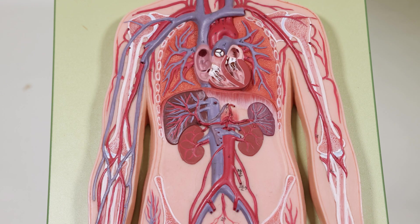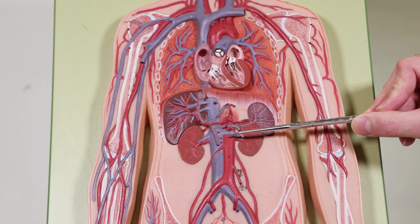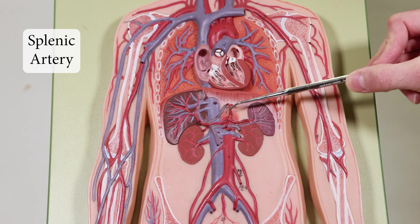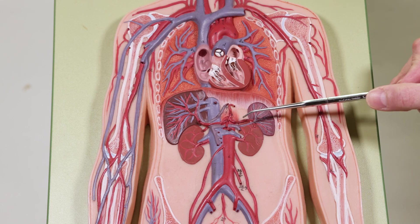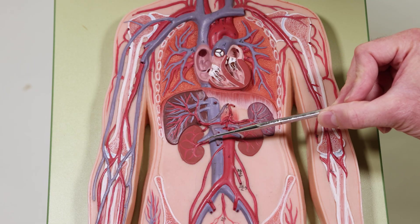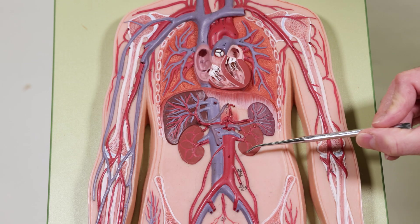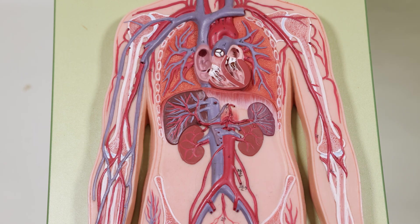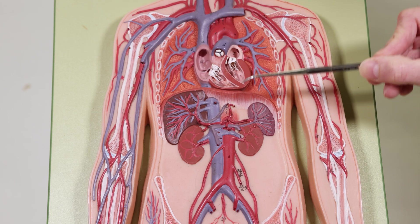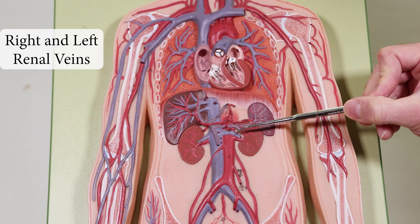In the torso region, right in the middle is the abdominal aorta and the inferior vena cava. From the abdominal aorta you have the celiac trunk, which branches into the hepatic artery and the splenic artery, with the gastric artery also coming off. Going down further is the superior mesenteric artery, then the inferior mesenteric artery. You also have the right and left renal arteries and the gonadal arteries branching off. On the venous side: the hepatic portal vein, the splenic vein, the superior mesenteric vein, the inferior mesenteric vein, and the right and left renal veins.